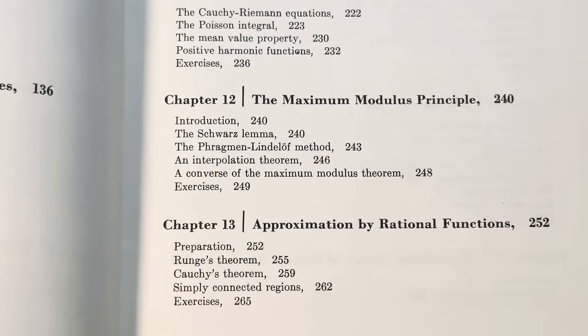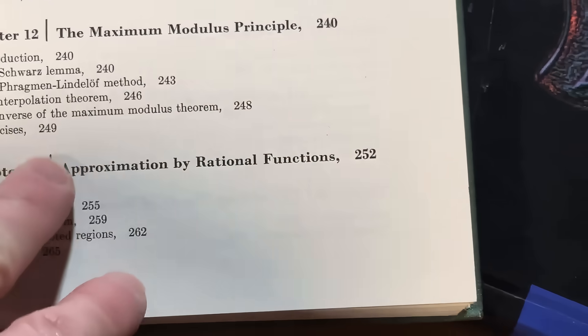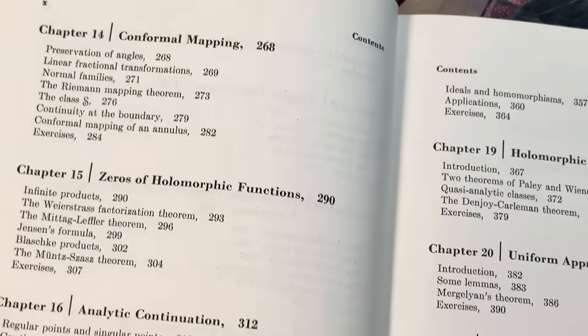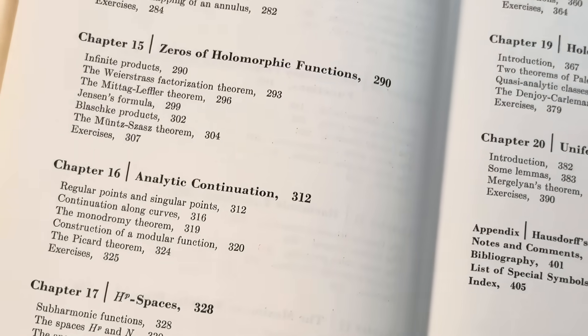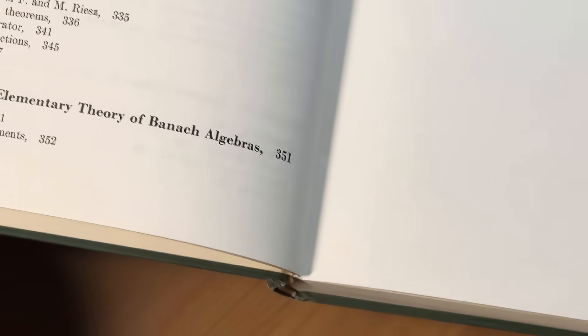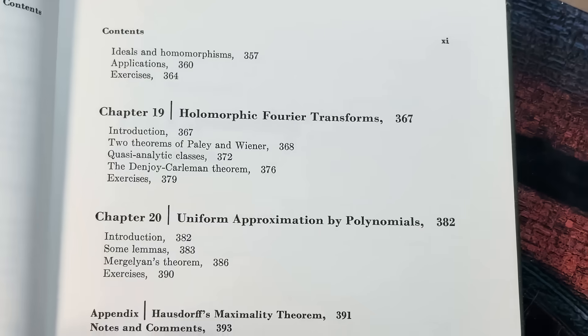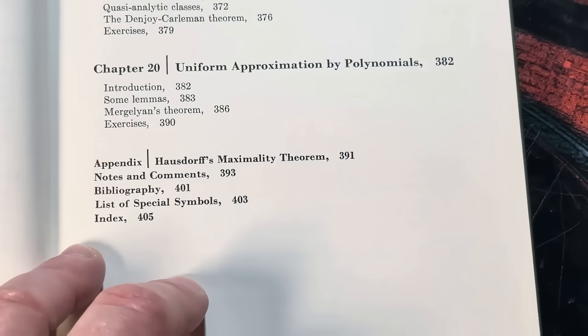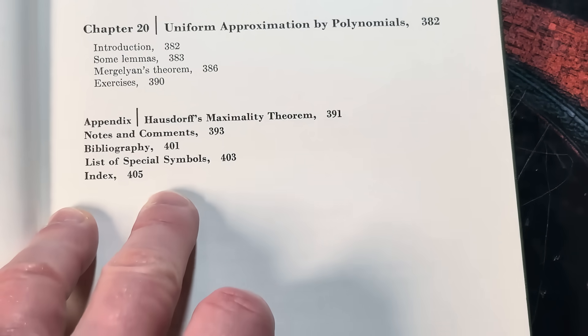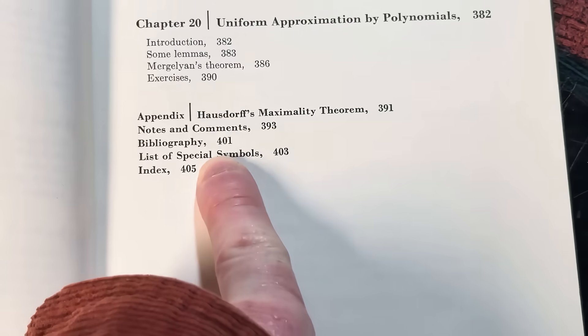So some of these things might seem familiar to you. Approximation by rational functions. This stuff is hard. Conformal mapping, zeros of holomorphic functions, analytic continuation. It's got a lot of content, right? HP spaces. Elementary theory of Banach algebras, holomorphic Fourier transforms, and uniform approximation by polynomials. It's an appendix and then it's got Hofstorff's maximality theorem.